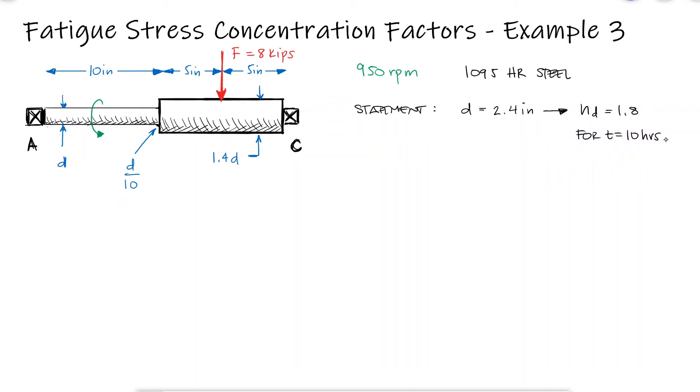If the design factor your colleague used to calculate the diameter of the shaft was 1.8, it means that the factor of safety should be greater than 1.8. 10 hours of operation suggests that the factor of safety is not that for infinite life, so we're not using the endurance limit but the fatigue strength for a given number of cycles.